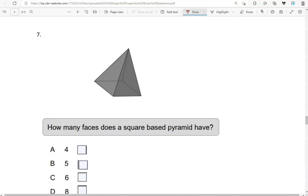How many faces does a square base pyramid have? So we have the base, so that's one, and then we have four other faces on the side: 1, 2, 3 on the back, and this one as well on the back. So that is five in total.